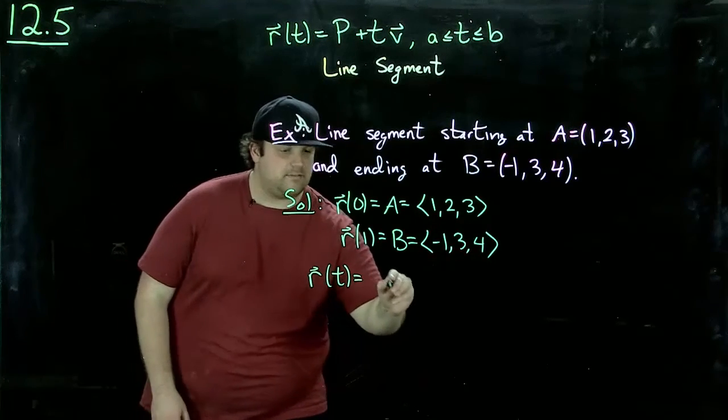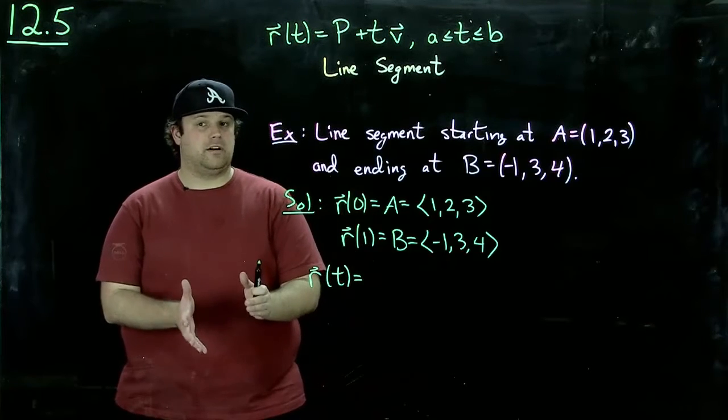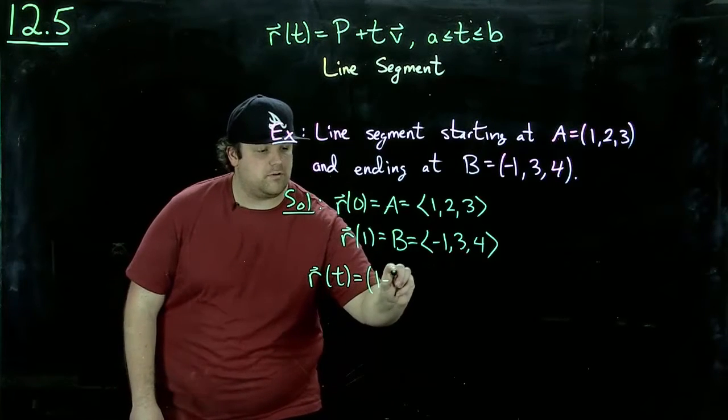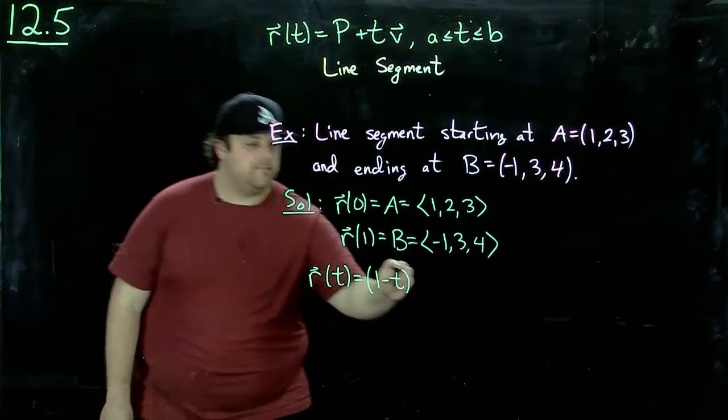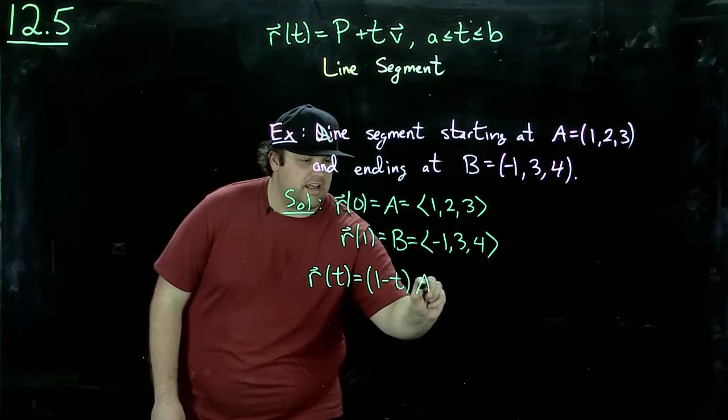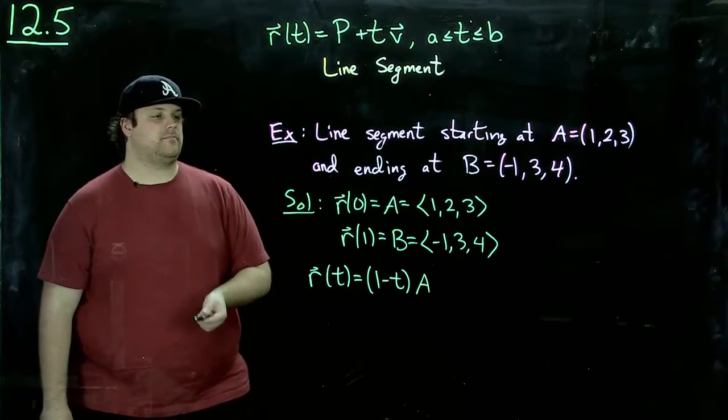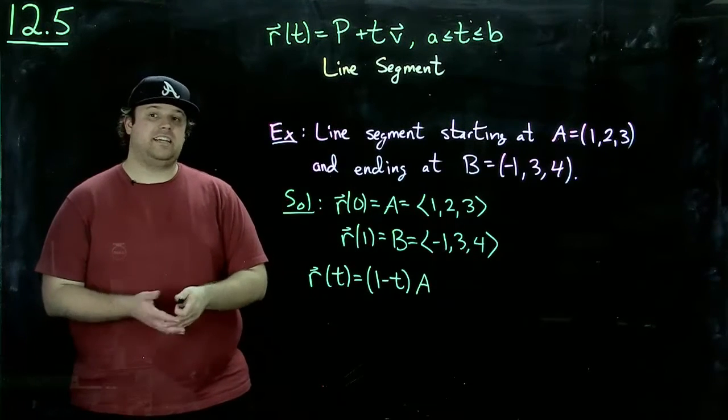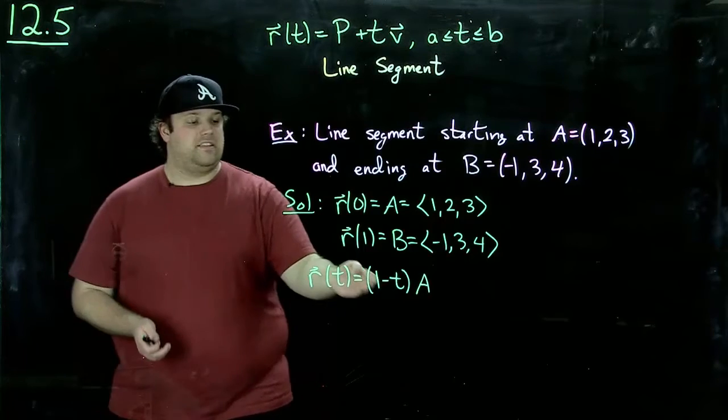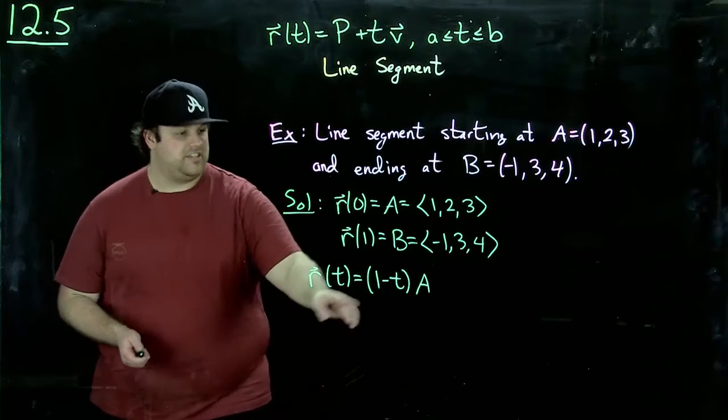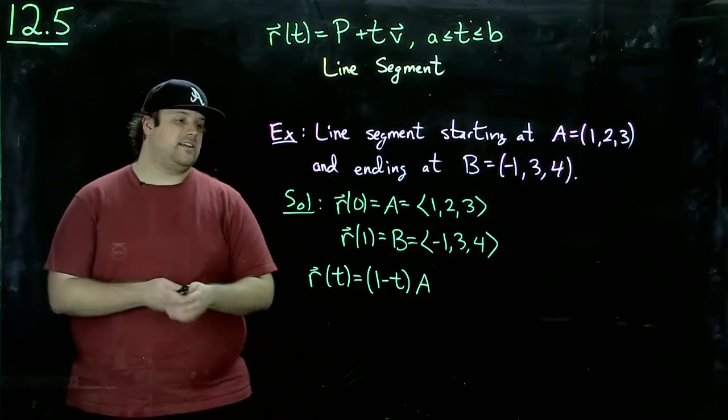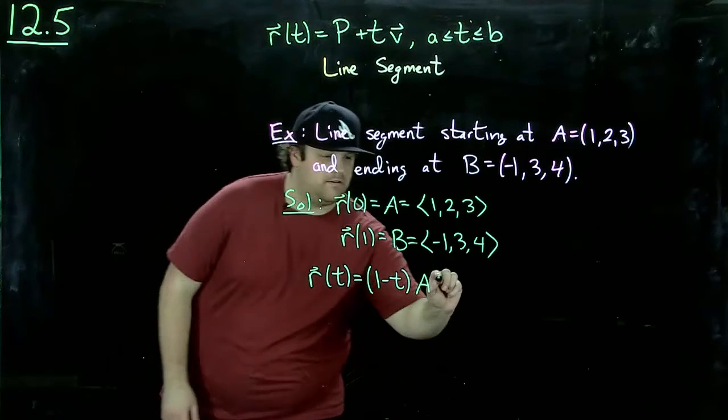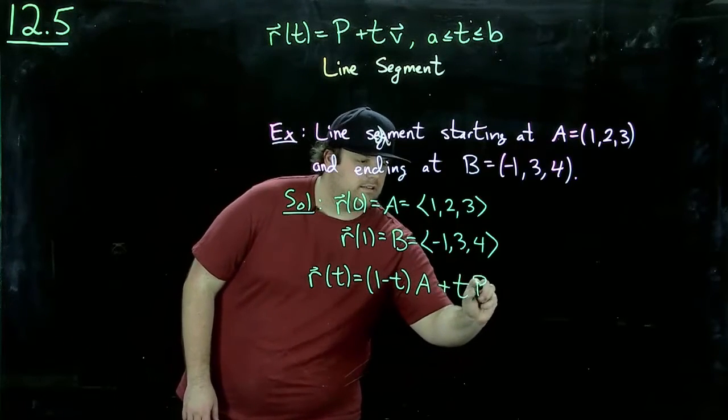when t is zero, I want something that's equal to one. And that, of course, is one minus t, right? If I plug in t equals zero to that, I get one. And now I can put a here. And then when t is one, I want this thing to be zero, which it is. I've cleverly chosen that here. And I want the other thing to be one. Of course, that's this.